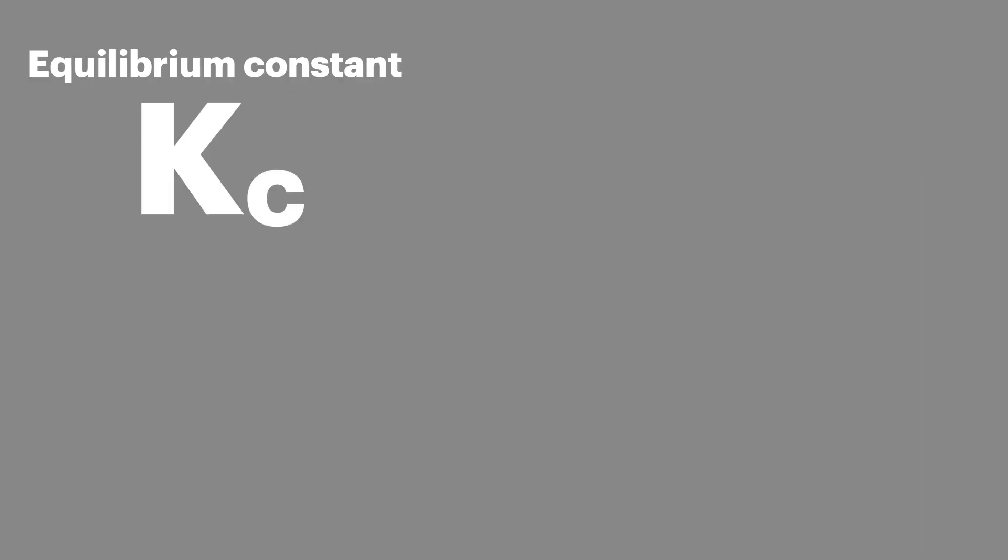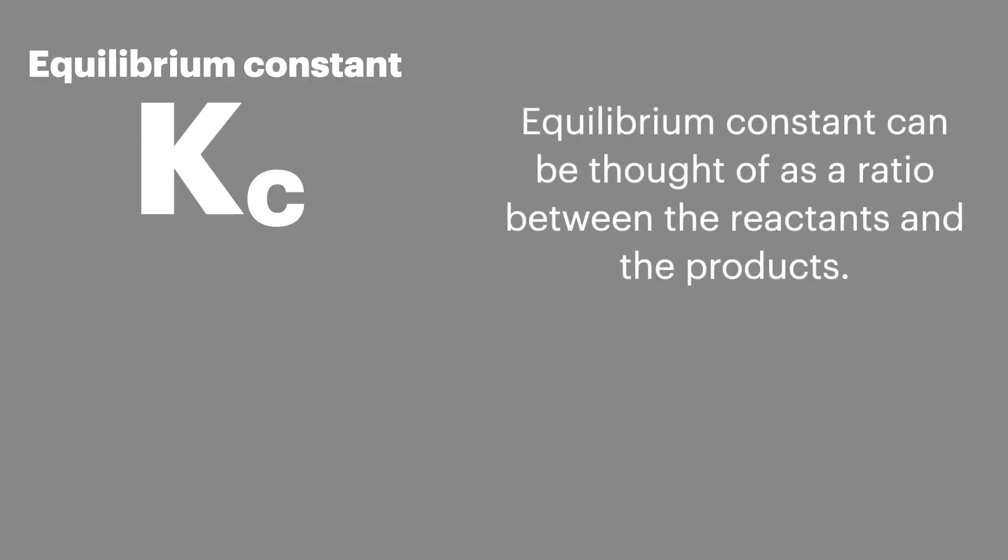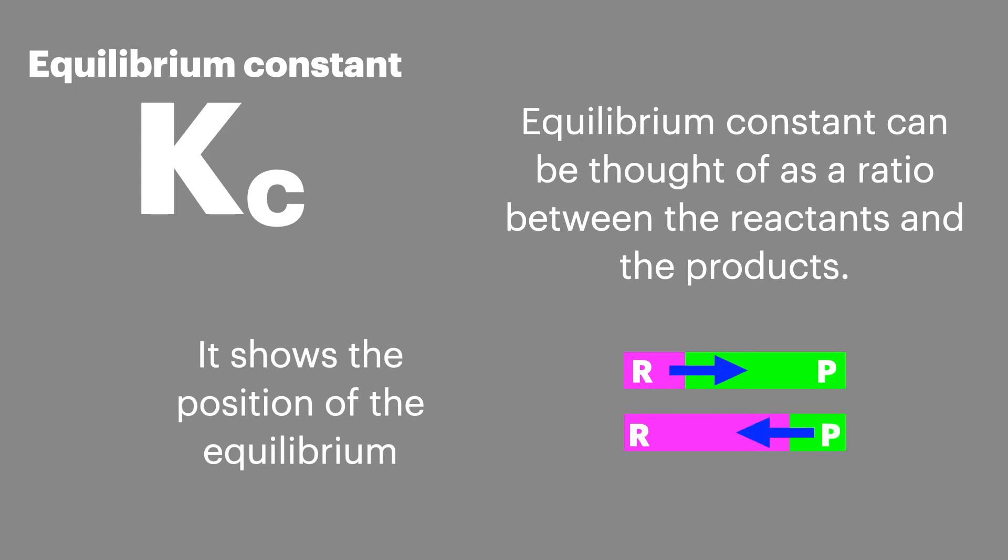The equilibrium constant Kc is a value that can be thought of a bit like a ratio of reactants to products. It shows us where the position of the equilibrium lies in a chemical equilibria and gives us an idea of whether we're going to have more products or more reactants in the final mixture.